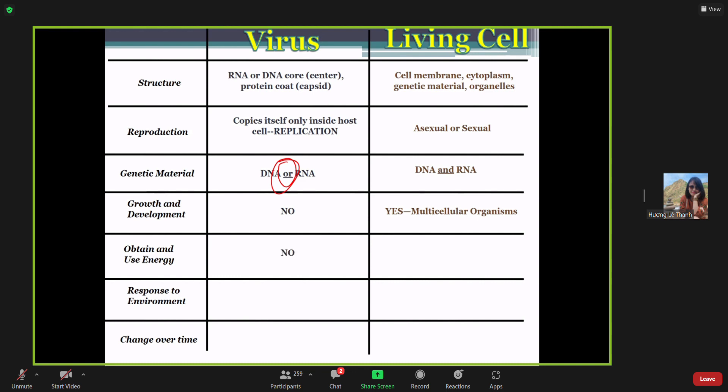To obtain and use energy: no for viruses, but living cells yes. Even the autotrophs or heterotrophs, they do obtain energies. Like the autotrophs create their own foods, but the heterotrophs take them from the autotrophs. And response to the environment: no, there's no response to the environment for viruses, but the living cell yes. You can feel that the cells respond to hot, cold, acidic, the air is fresh or pollution, etc. And change over time: the virus is no, but the living cell yes.